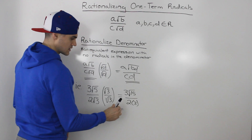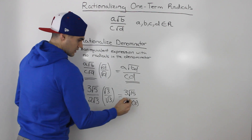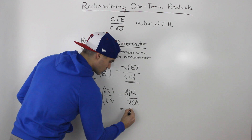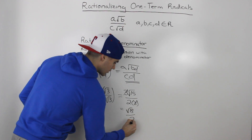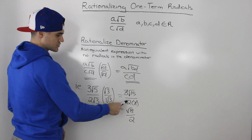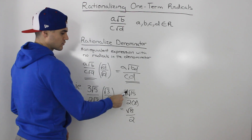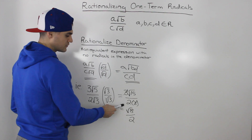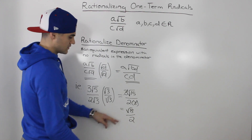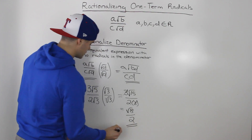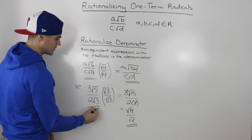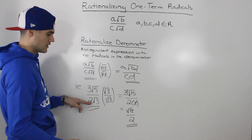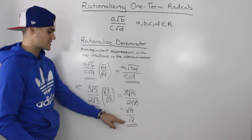We can actually simplify this — the 3s cancel out, so we're just left with root 15 over 2. We could have also multiplied the denominator to get 3 root 15 over 6, but then the 3 and the 6 simplify to 1 over 2. So root 15 over 2 is equivalent to our original expression 3 root 5 over 2 root 3, but now there are no radicals in the denominator.